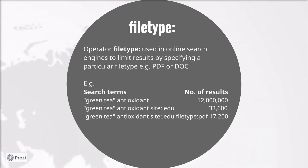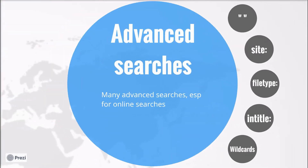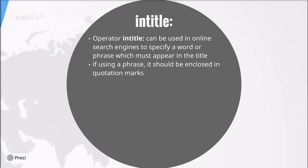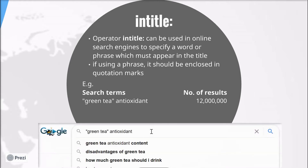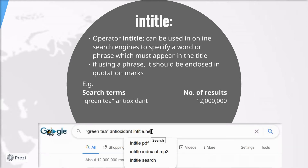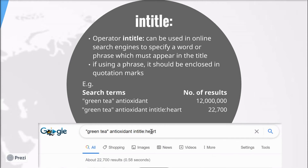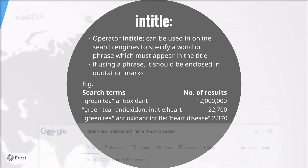Next, the intitle operator, again for search engines. This operator is used to specify a word or a phrase which must appear in the title. If you're using a phrase you need to enclose it in quotation marks. So again, using the previous example green tea antioxidant — if I add the operator intitle:heart in order to find articles with heart in the title, it reduces to 22,000 results. Maybe I want to be more specific and have articles with the phrase heart disease in the title, so intitle:"heart disease" and now I have just over 2,000 results.